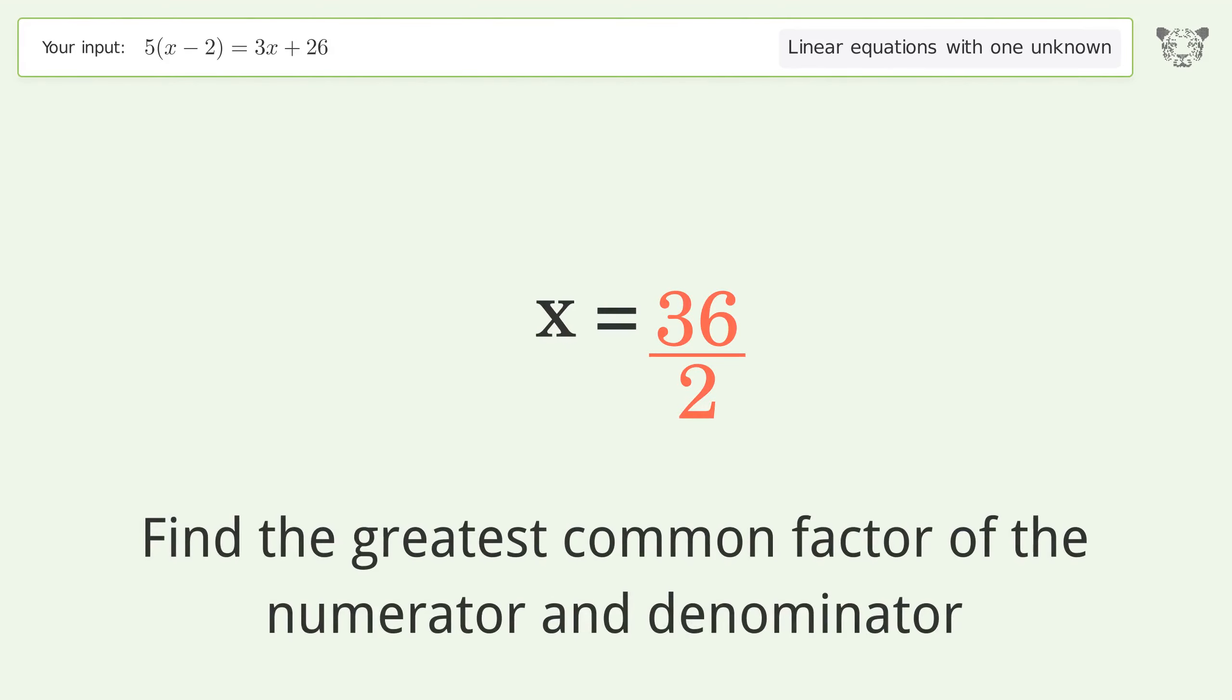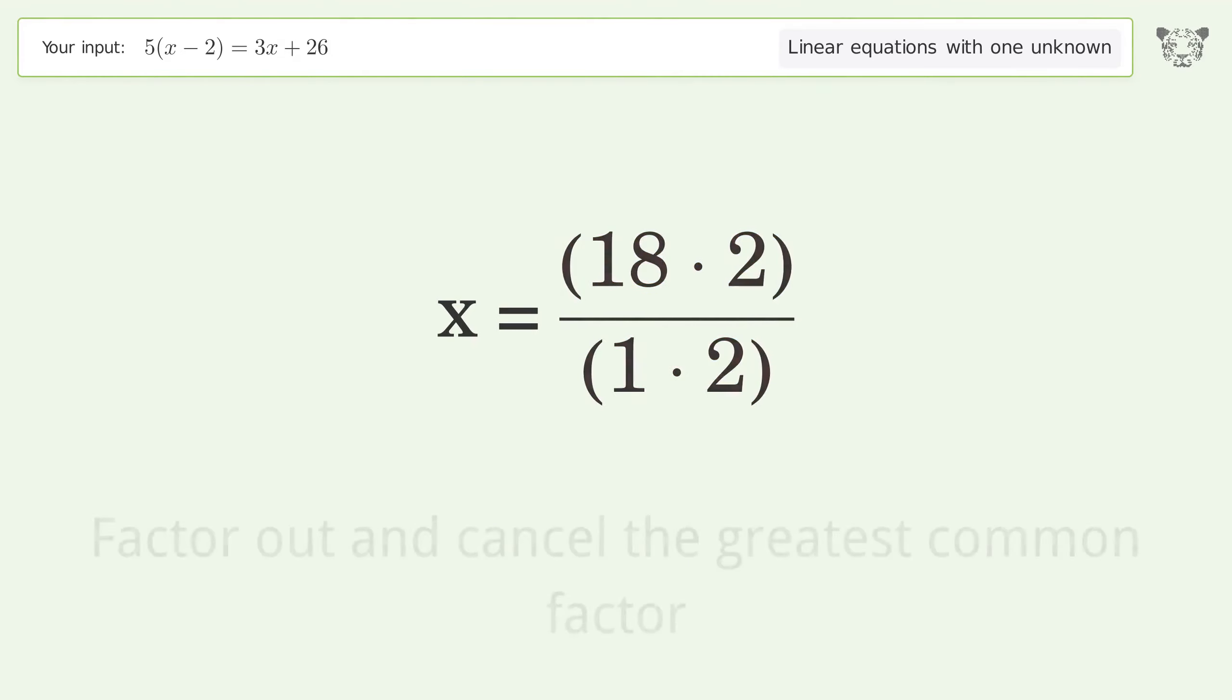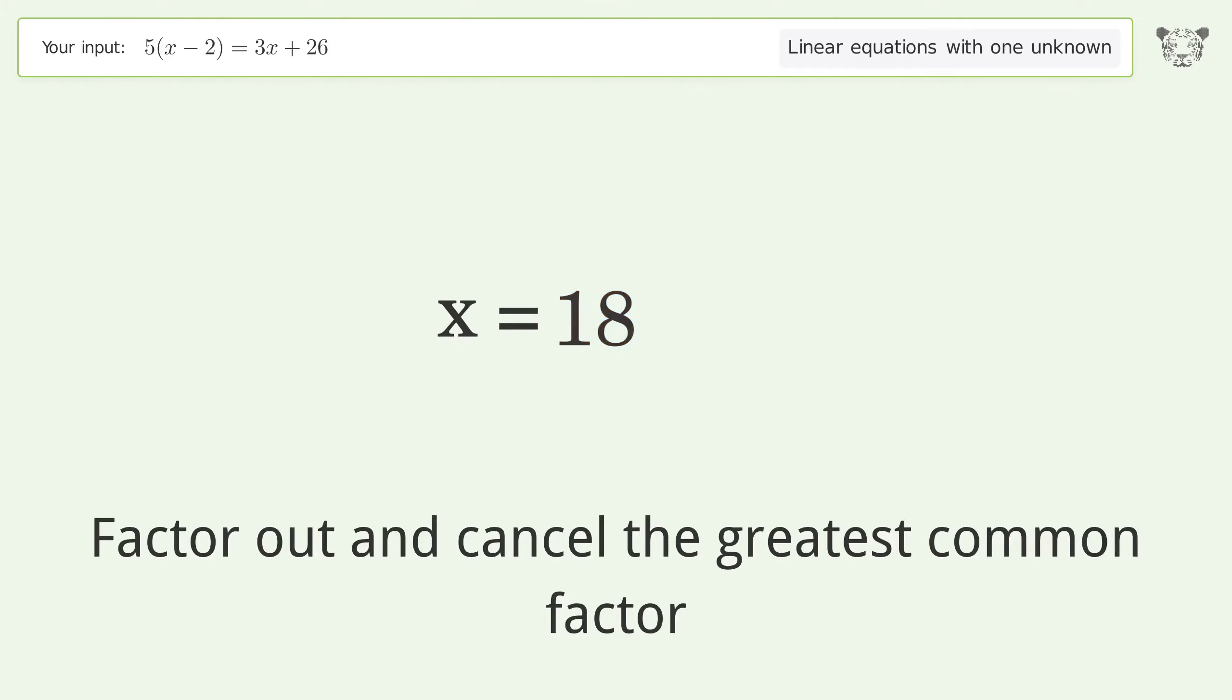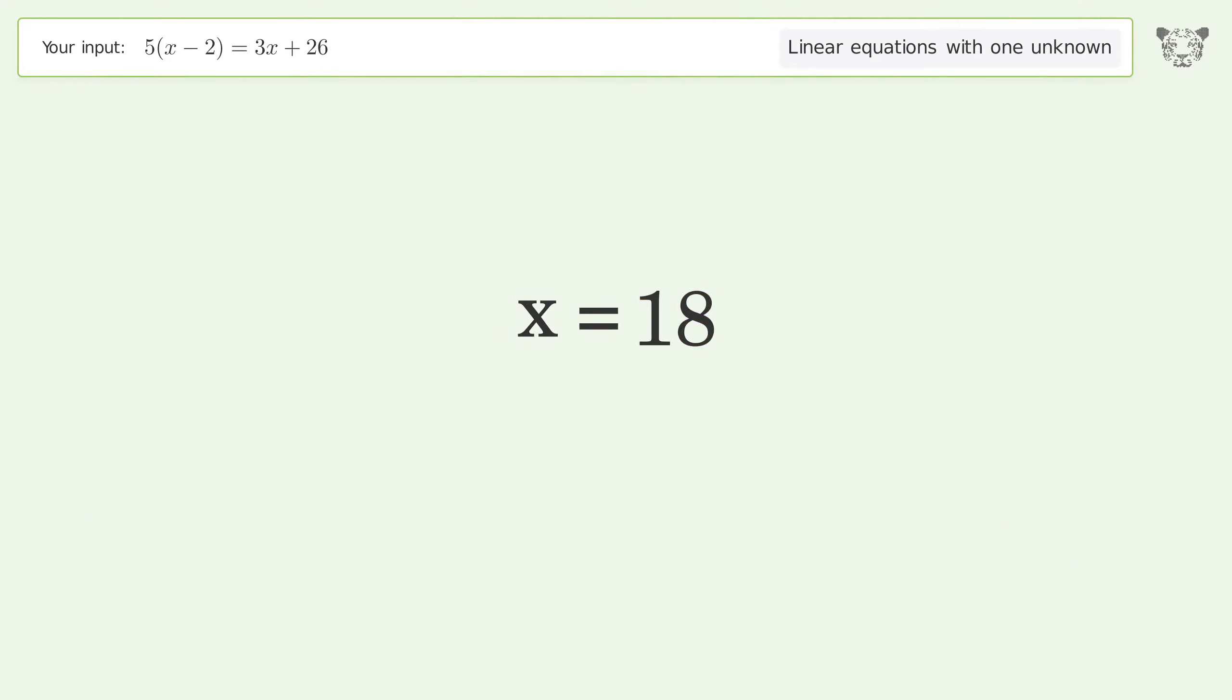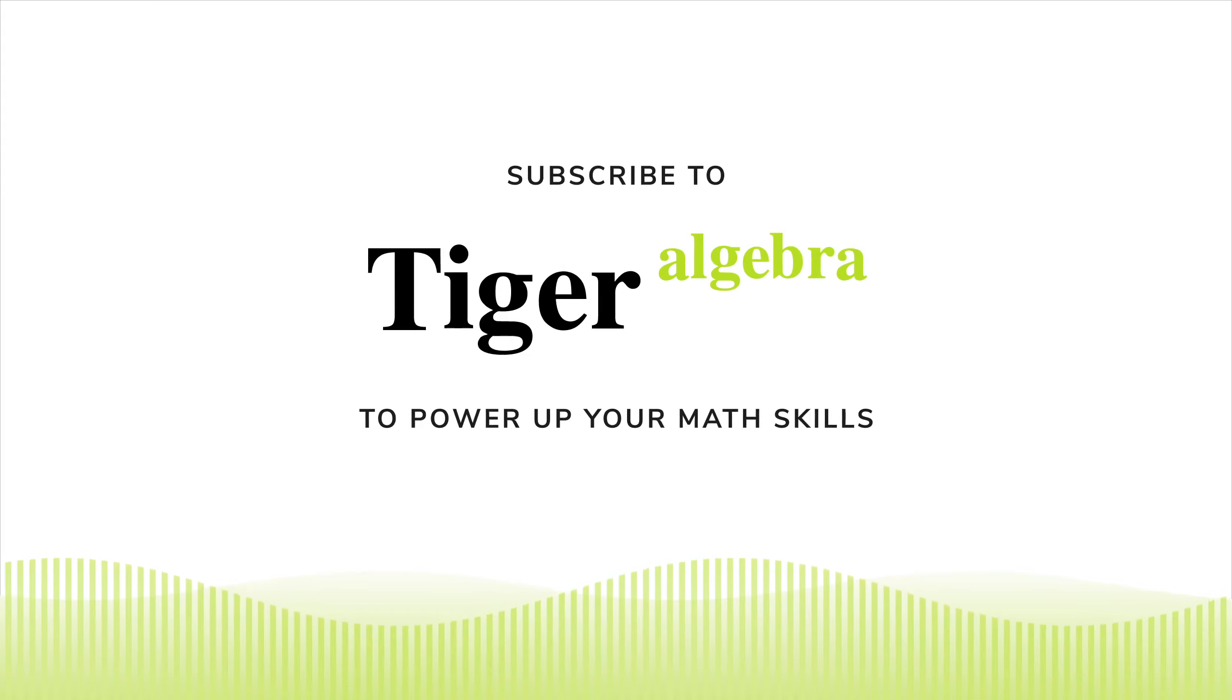Find the greatest common factor of the numerator and denominator. Factor out and cancel the greatest common factor. And so the final result is x equals 18.